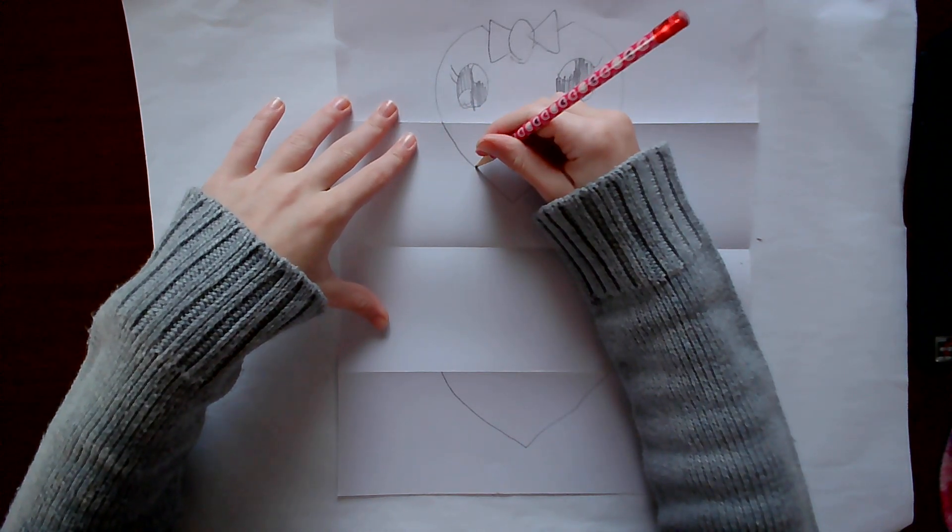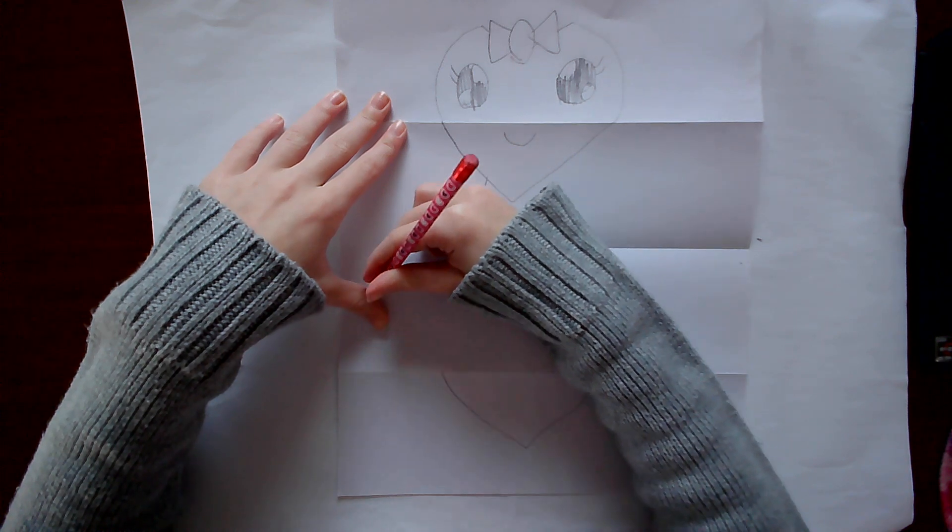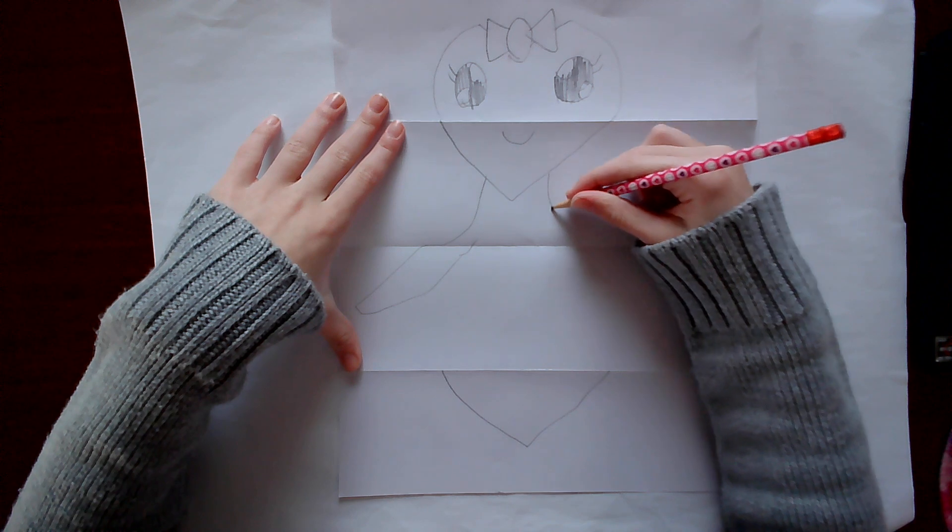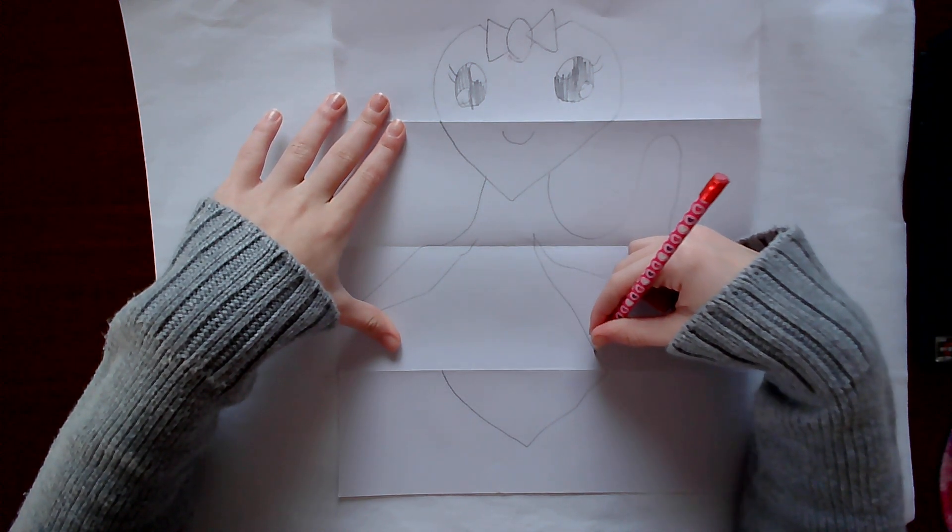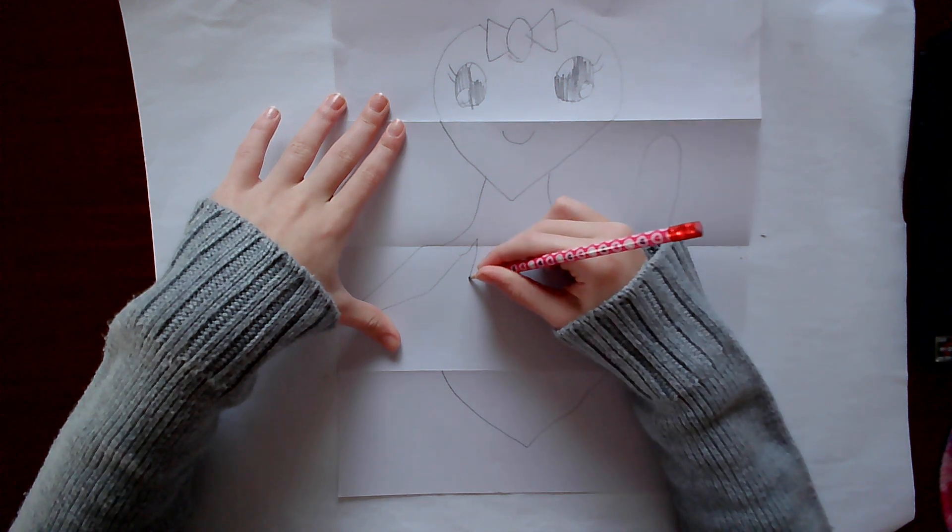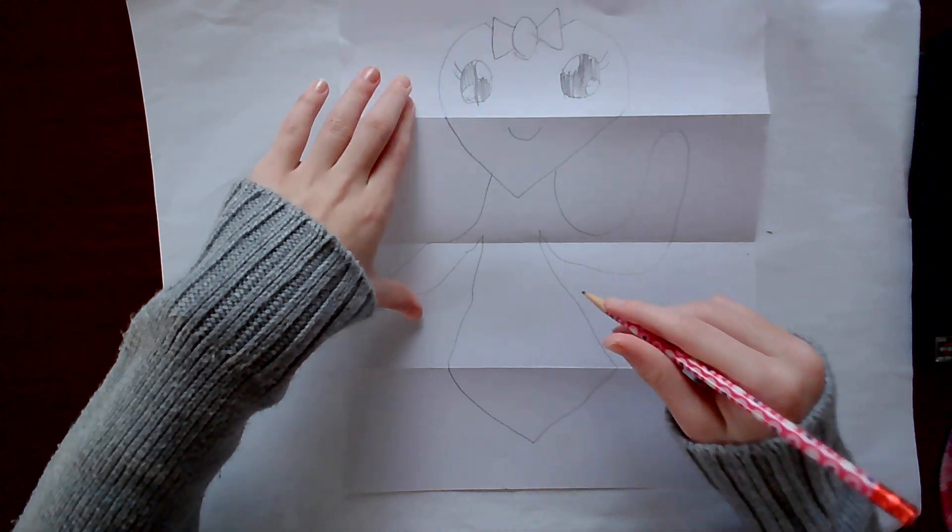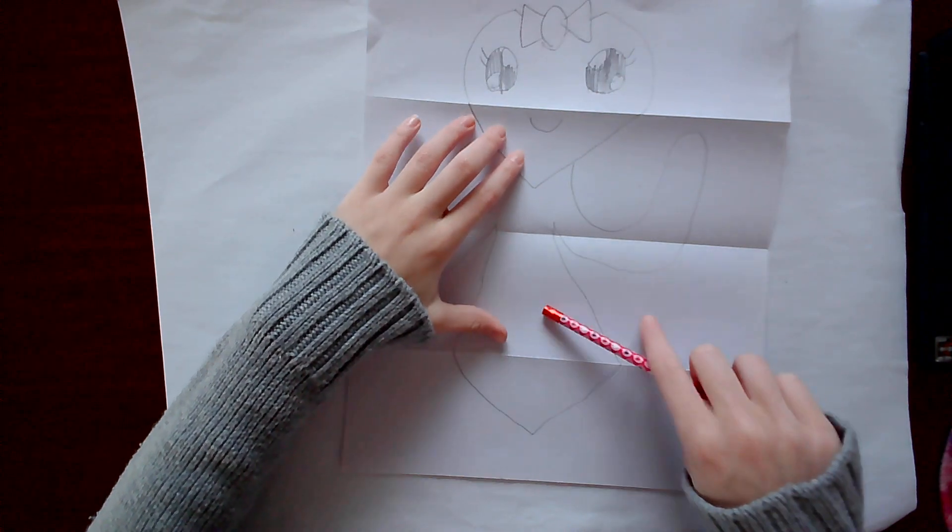So we're going to make some arms. One arm is waving. And then this bottom piece that connects to the bottom piece of the heart when it's like this will act as a dress.